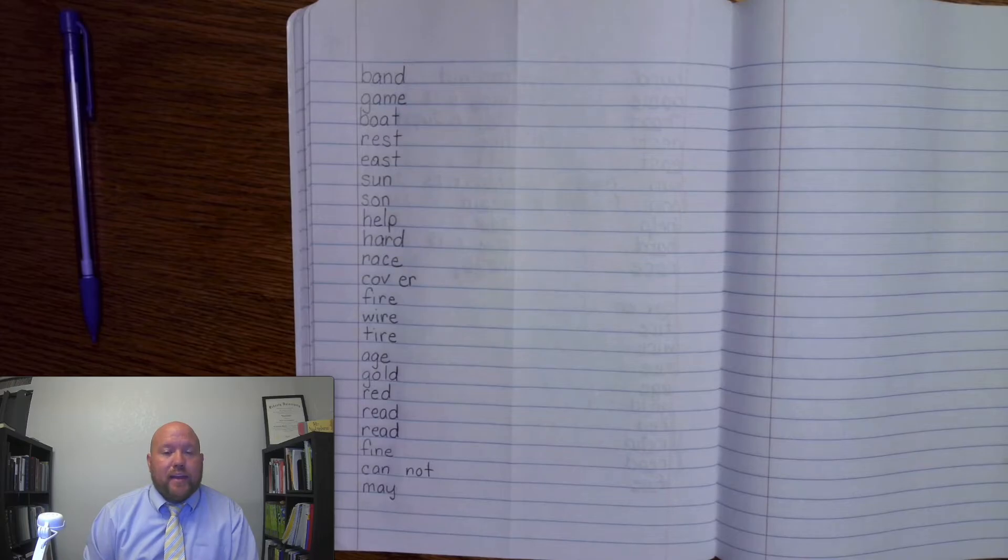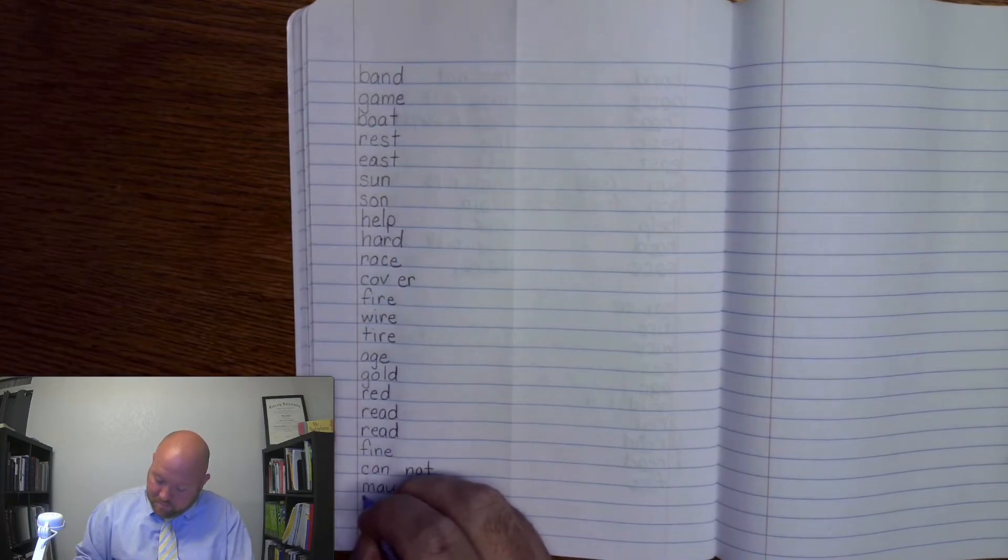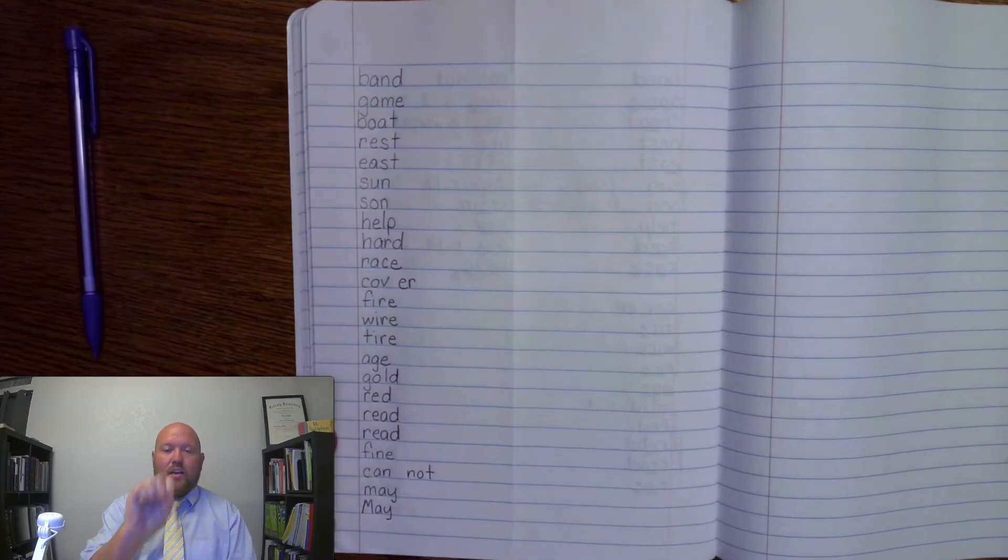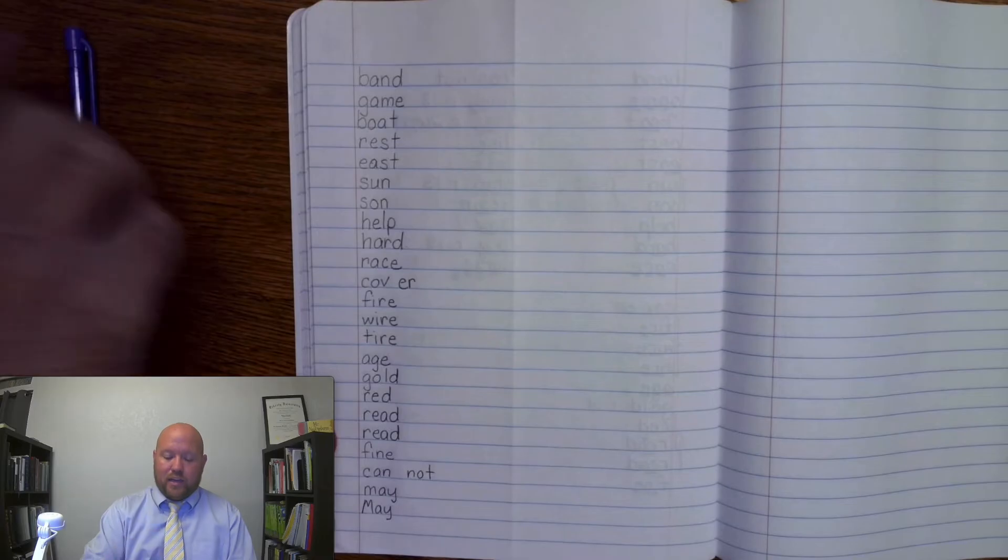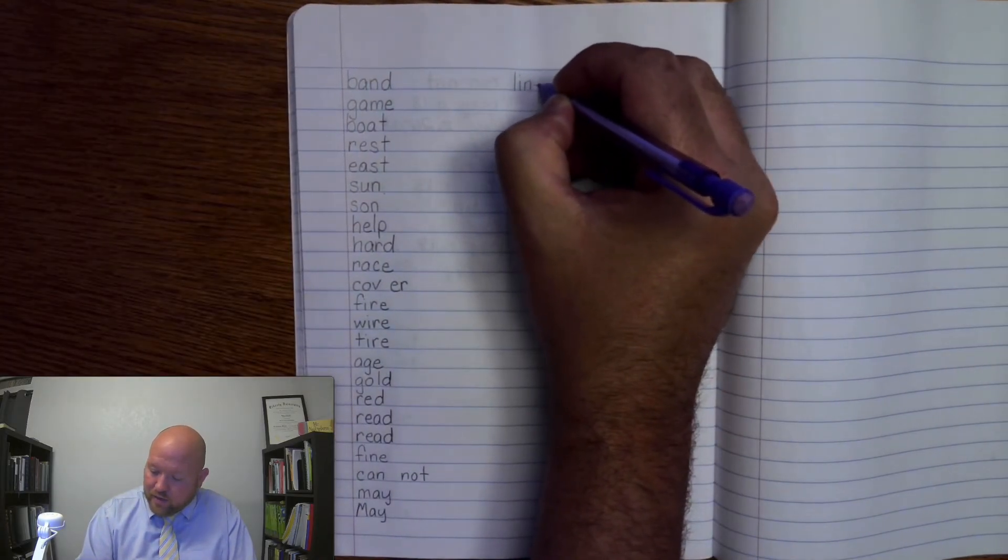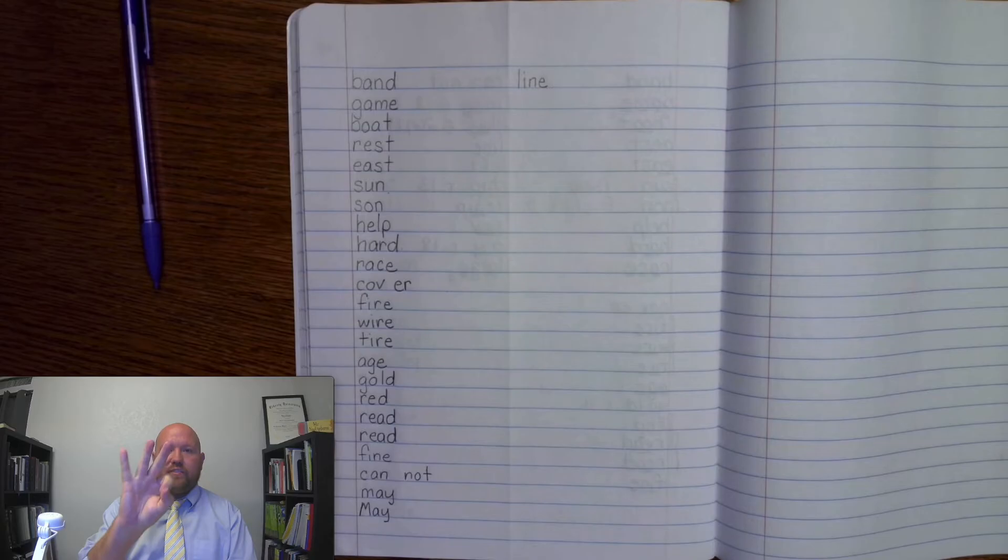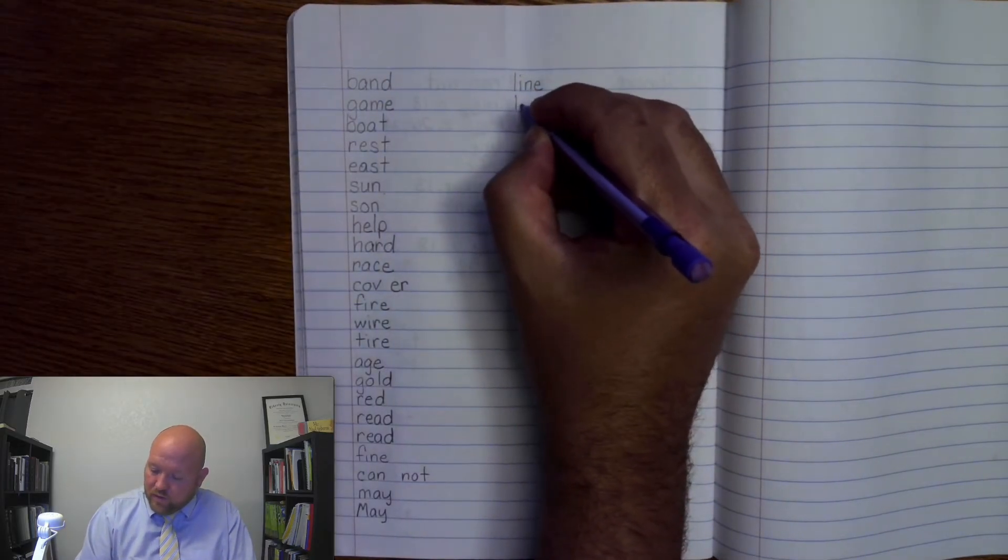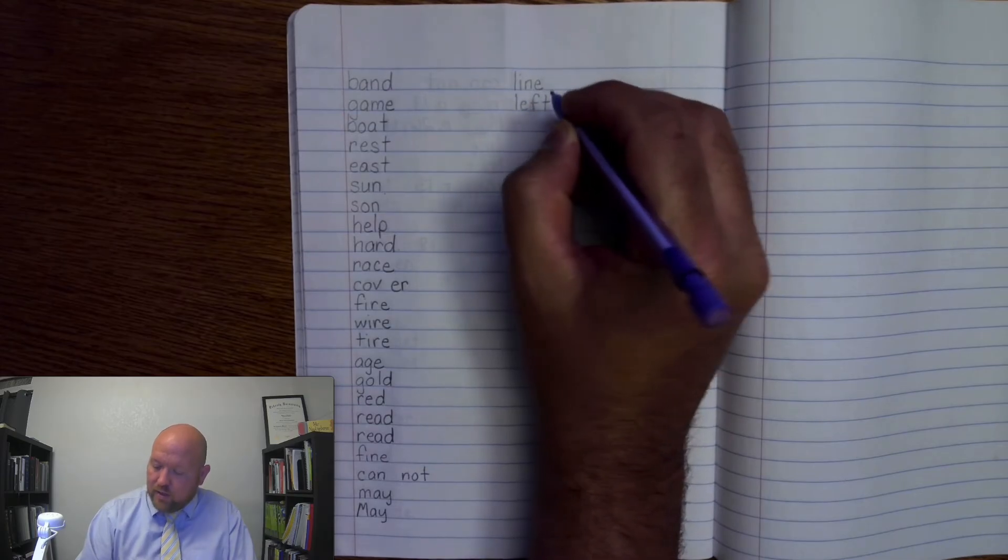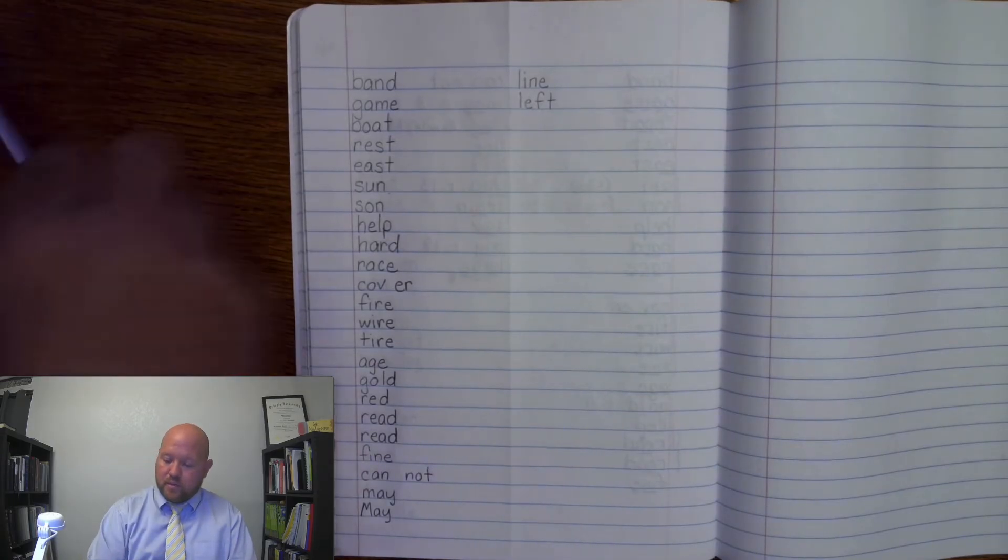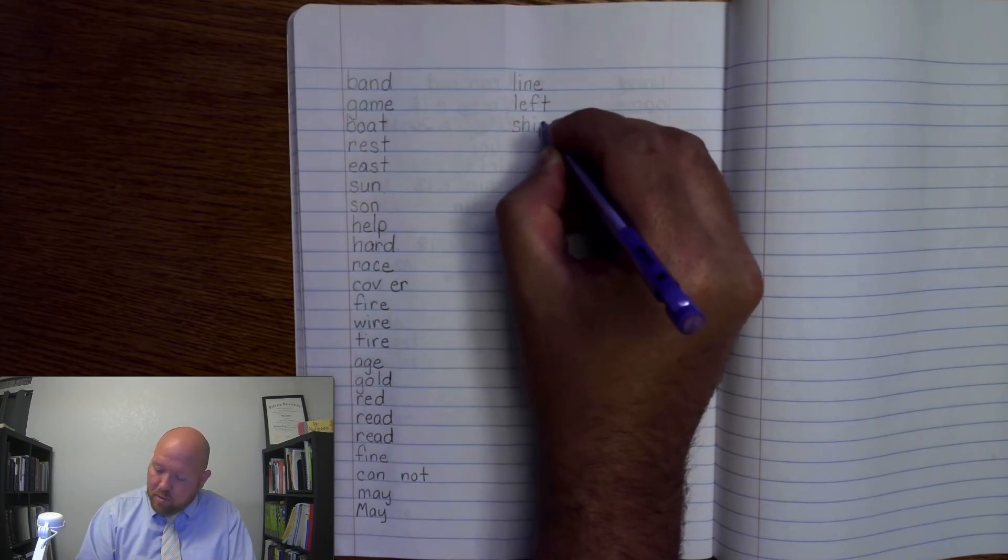Next one is May, like the month of May. M-A-Y. May. M-A-Y. May. Right? So make sure the month you capitalize. The next one is line. L-I-N-E. Line. L-I-N-E. Line. Next word is left. L-E-F-T. Left. L-E-F-T. Left. Next word is ship. S-H-I-P. Ship. S-H-I-P. Ship.